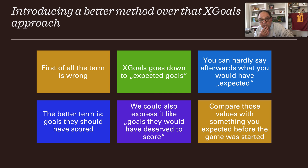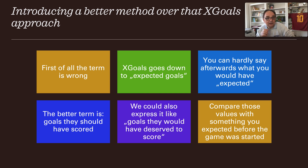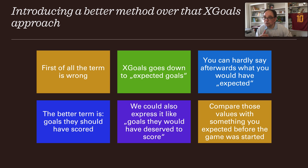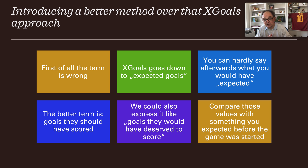I'm introducing a better method over that x-goals approach, because I try to be professional in my gambling and betting approach. First, the term itself is wrong — x-goals stands for expected goals, but you can hardly say afterwards what you would have expected beforehand. The better term is 'goals they should have scored,' which is what I use.